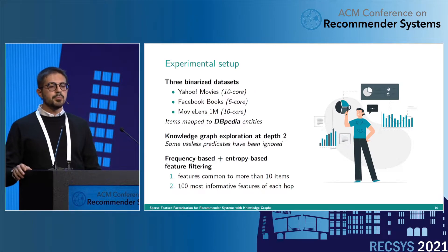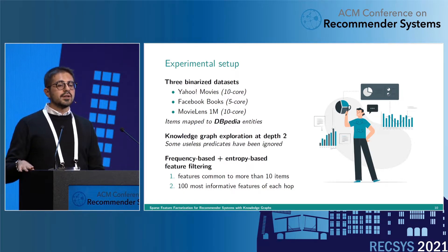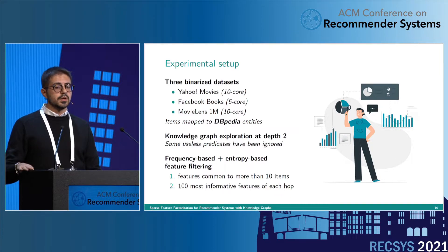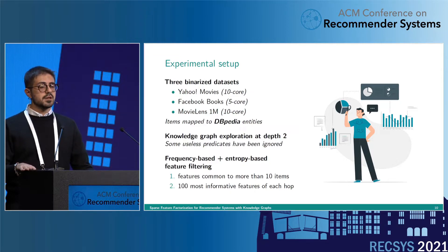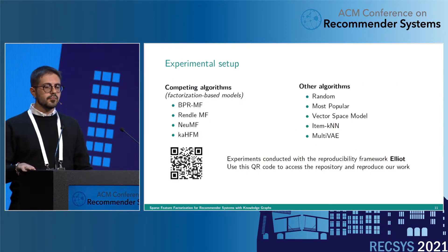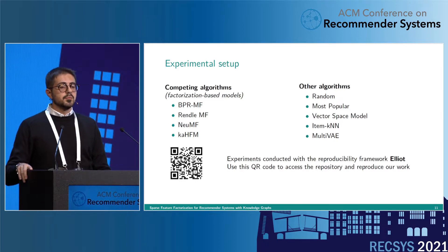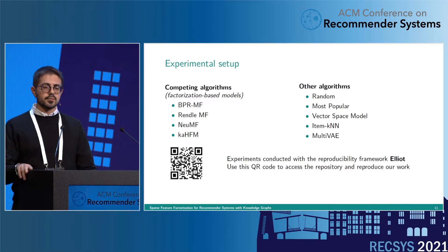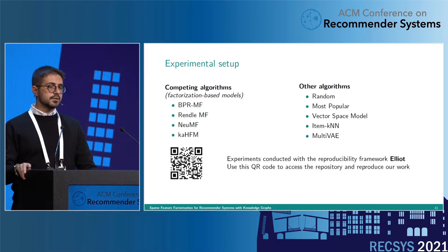For the experimental part, we used three binarized datasets — namely Yahoo! Movies, Facebook Books, and MovieLens 1M — with items mapped to DBpedia Knowledge Graph entities. We explored the Knowledge Graph at depth 2, and we filtered out some features based on their frequency and their entropy. We compared KG Flex performance with some factorization-based models — BPR-MF, Randall-MF, NeuMF, and KA-HFM — and with some other state-of-the-art algorithms. All the experiments have been conducted with the framework Elliot, and at the QR code shown you can find all the reproducibility details and implementation.